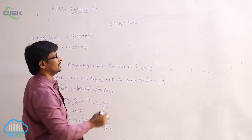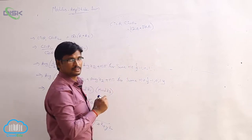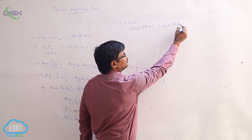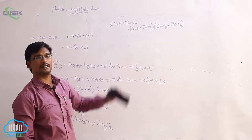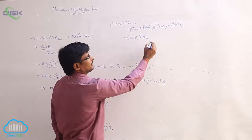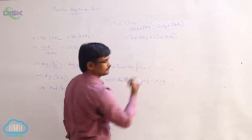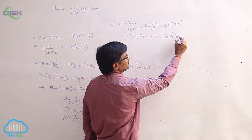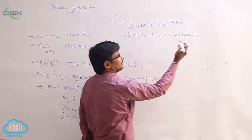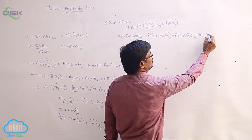By notation, cis θ₁ = cos θ₁ + i sin θ₁ and cis θ₂ = cos θ₂ + i sin θ₂. Multiplying out: cos θ₁ · cos θ₂ + cos θ₁ · i sin θ₂ + i sin θ₁ · cos θ₂ + i sin θ₁ · i sin θ₂. Since i² = −1, the last term becomes −sin θ₁ · sin θ₂.